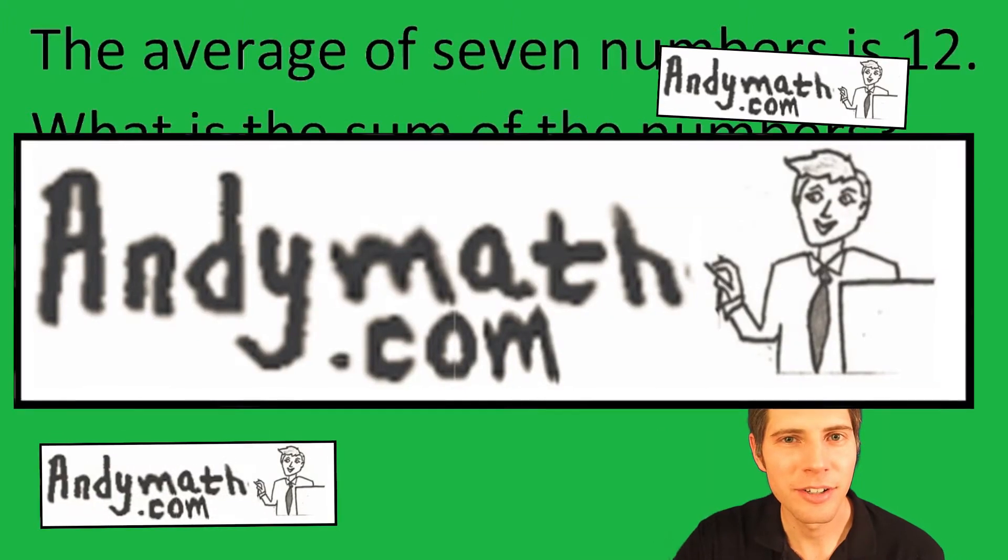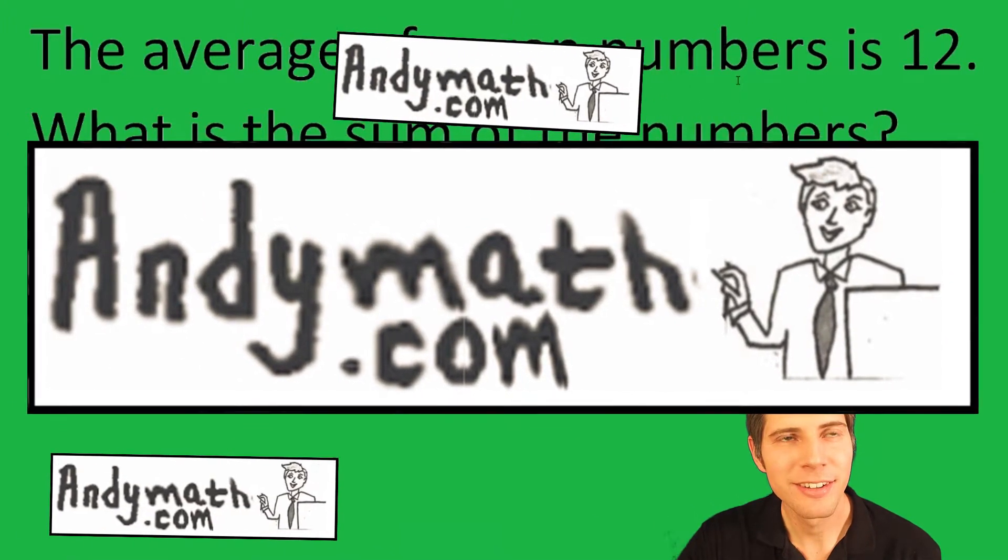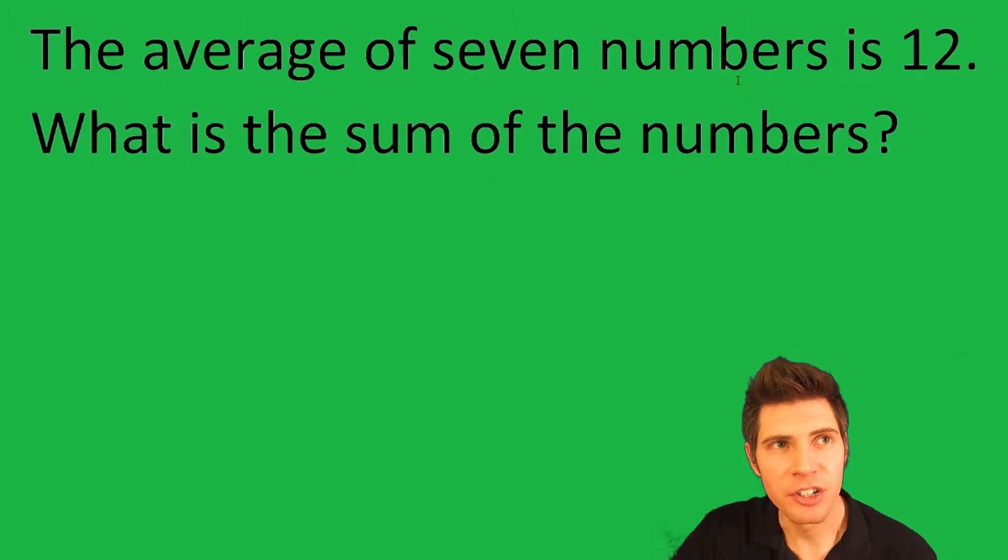Hey guys, welcome to this video. The average of seven numbers is 12. What is the sum of the numbers?